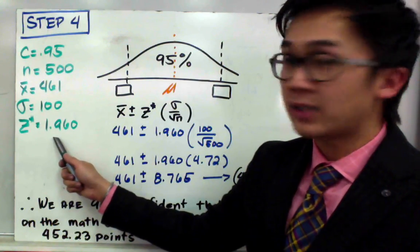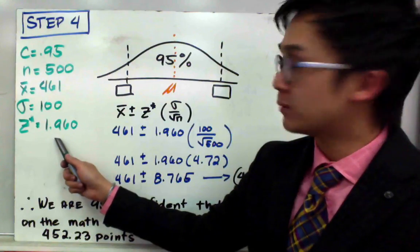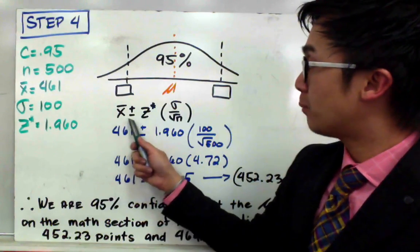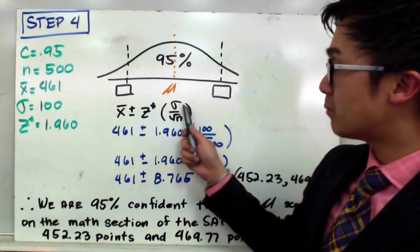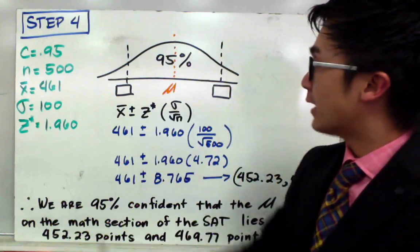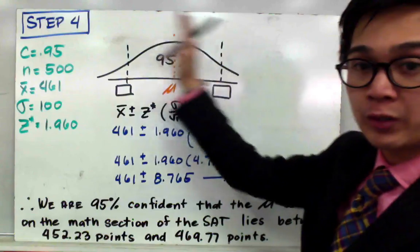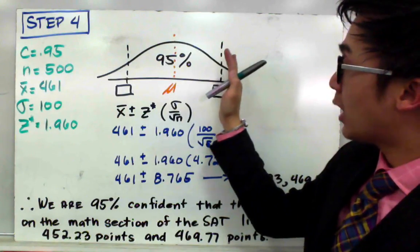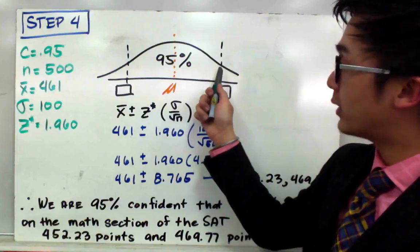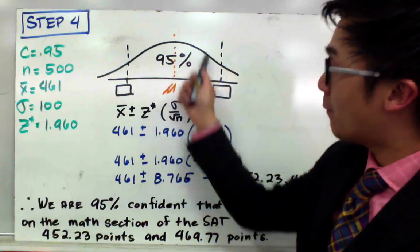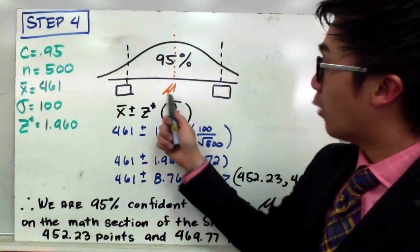Now the formula for finding the confidence interval for population mean is given by X bar plus or minus Z star multiplied by sigma all over the square root of n. This is our illustration for our normal distribution, and we are working on the 95% confidence level, so the width of our distribution is about 95%.